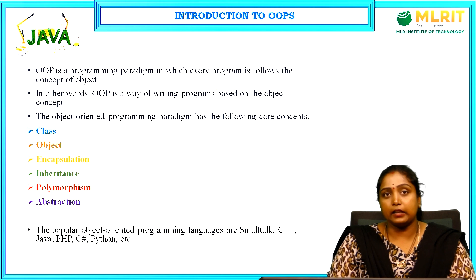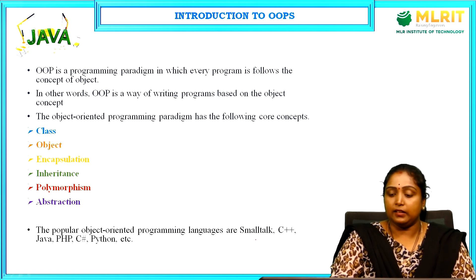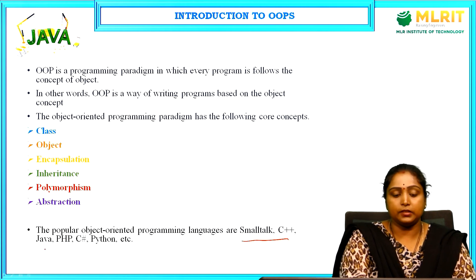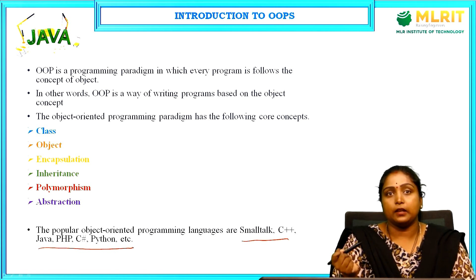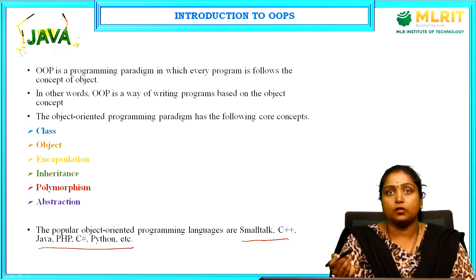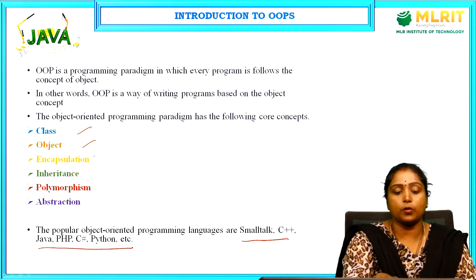Popular object oriented programming languages include Smalltalk, C++, Java, Python, C#, and PHP. There are many OOP languages available. We will see the concepts of class, object, encapsulation, inheritance, polymorphism, and abstraction in detail in this session.